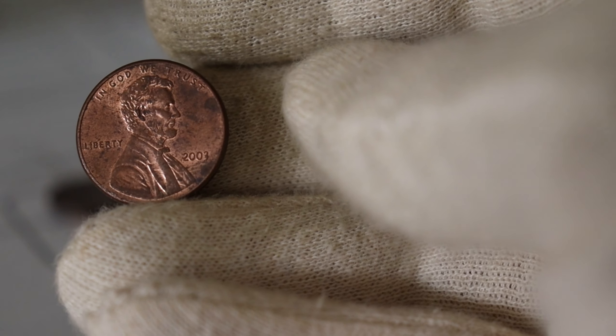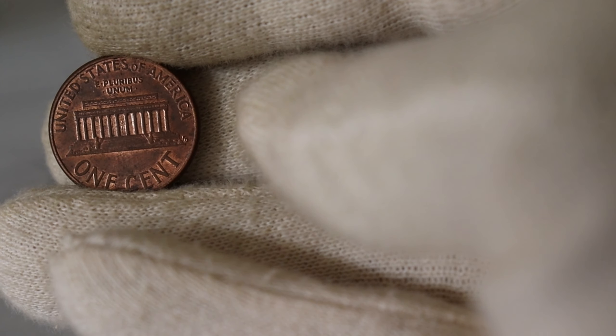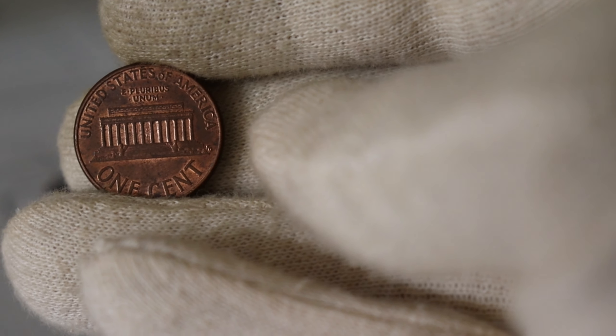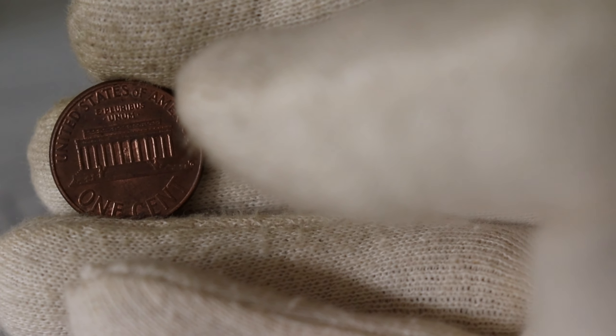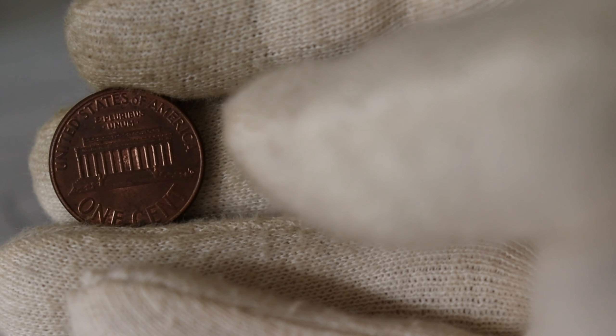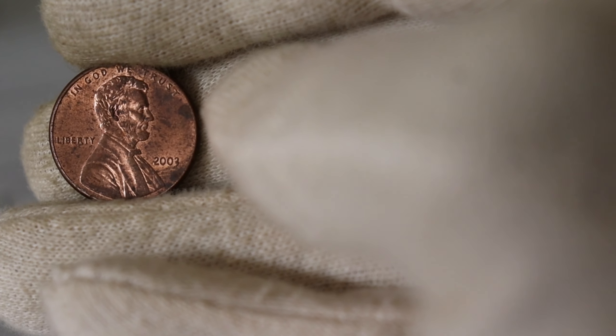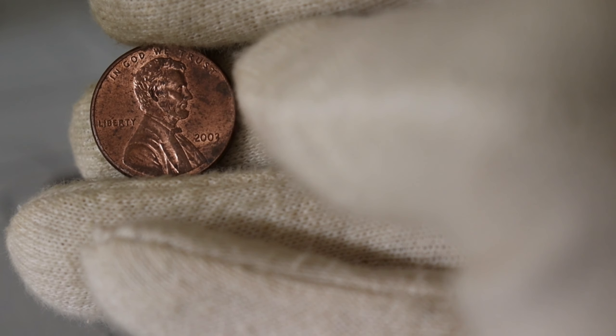The 2003 1-cent coin holds a special place in the hearts of collectors. Struck by the United States Mint, this coin is part of the long-standing tradition of the Lincoln-Cent series. The obverse features the iconic profile of Abraham Lincoln, the 16th President of the United States, while the reverse showcases the Lincoln Memorial, a design introduced in 1959 to honor the 150th anniversary of Lincoln's birth.